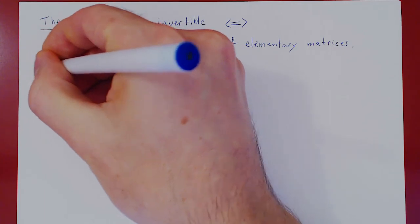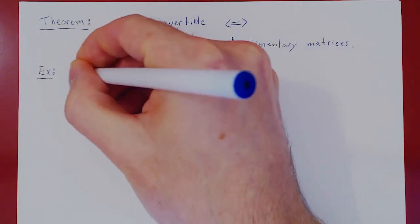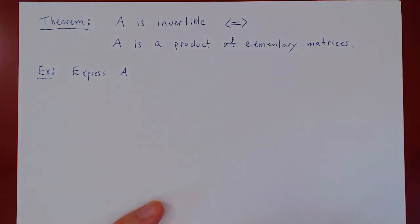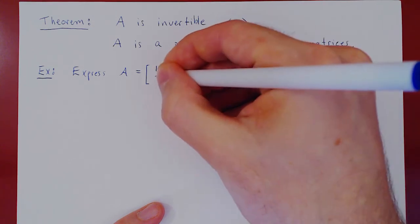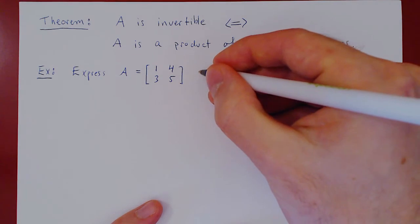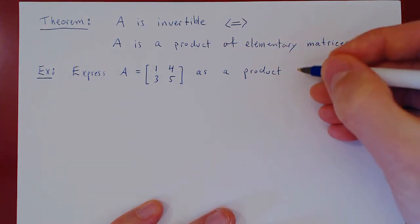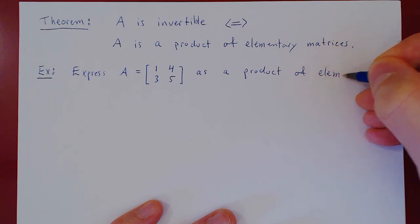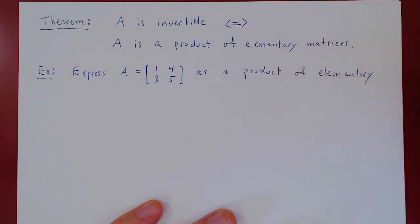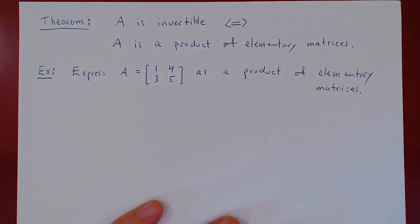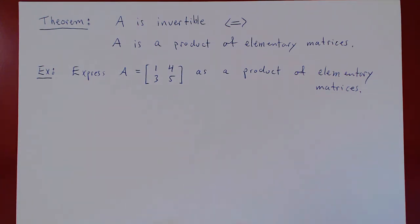Here's the example. We'll take a 2 by 2 matrix — this works for any square matrix — and express A, which is the matrix 1, 4, 3, 5, as a product of elementary matrices. Let's first find the inverse, keeping track of each row operation, and then we'll see how we can introduce elementary matrices.